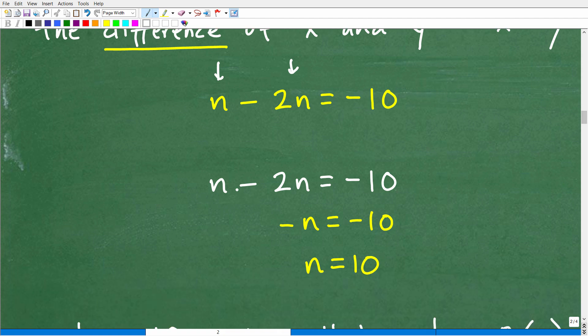So we have n minus 2n. So this is a positive 1n. So this is a negative 2n. So positive 1 plus negative 2 is negative 1n. So negative 1n is equal to negative n. How do I solve for n? Well, we need to go ahead and divide both sides of the equation by negative 1. So negative 10 divided by negative 1 is 10. So n is equal to 10.